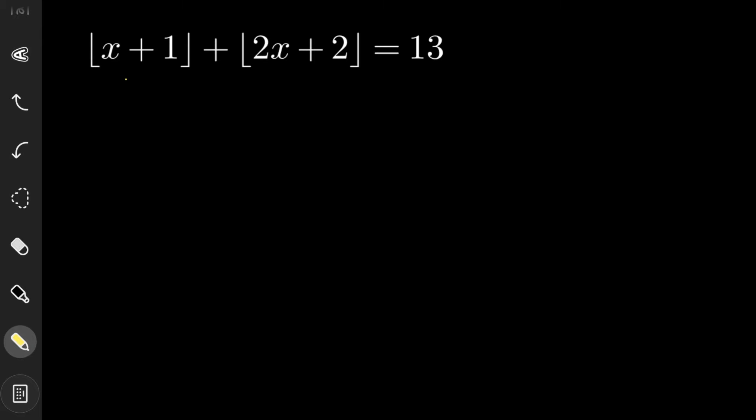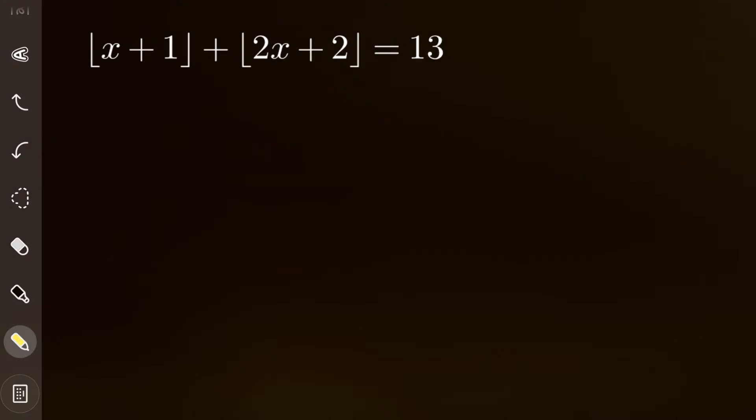Today we have a nice problem related to floor functions. We have to find all the possible values of x that satisfy the equation: floor(x + 1) + floor(2x + 2) = 13. Now let us see the solution and how we can solve this problem.